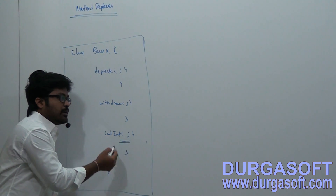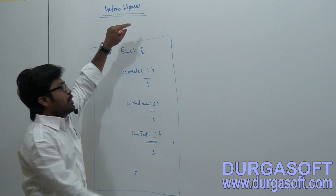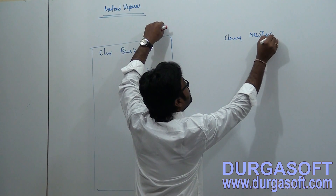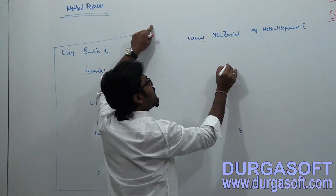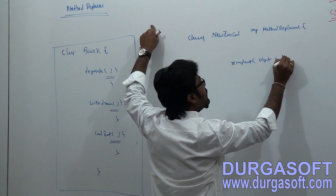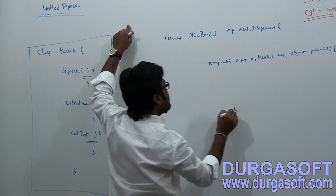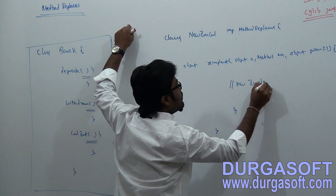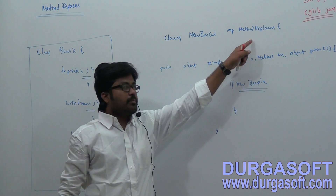If you want to override the calculate interest, withdraw, or deposit method implementation, you can provide that method implementation patch using method replacer. You implement a new interest calculation class. You need to implement this class from the MethodReplacer interface. That interface provides one method: reimplement, with object, method, and array of object parameters as arguments, and return type public object. Here you can provide any new implementation you require.